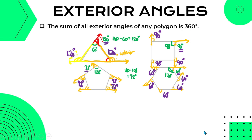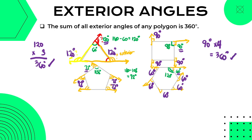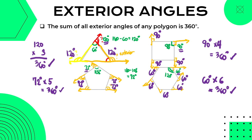Let us check: for a triangle we have 120 degrees per exterior angle and 3 exterior angles — that gives 360 degrees. For a quadrilateral, 90 degrees times 4 exterior angles is also 360 degrees. For a pentagon, 72 degrees times 5 is 360 degrees. For a hexagon, 60 degrees times 6 exterior angles is also 360 degrees. So tama nga na ang sum ng lahat ng exterior angles will always equal 360 degrees.